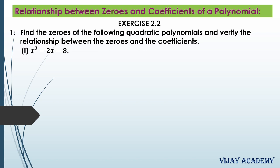If alpha and beta are the zeros of the quadratic polynomial, then the polynomial can be written as k times (x square minus (alpha plus beta)x plus alpha times beta), where k is a non-zero constant. Now let us solve the problems from Exercise 2.2. The first question is: find the zeros of the following quadratic polynomials and verify the relationship between the zeros and the coefficients.